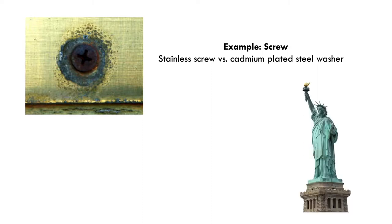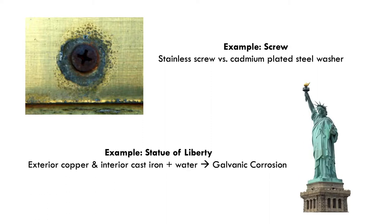Another notable example is the Statue of Liberty. The exterior is made out of copper and the interior is made out of cast iron. When it rained, water got trapped within the torch of the Statue of Liberty and leaked onto the exterior. This resulted in galvanic corrosion, so the interior material had to be replaced. The copper was the cathode and the cast iron was the anode. The leaking water caused the galvanic corrosion, and the interior was then replaced with stainless steel.